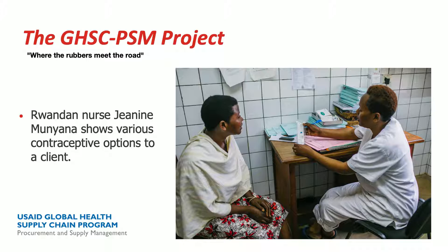This presentation will look specifically at our work in reproductive health, and specifically contraceptives. I like to say that we are where the rubbers meet the road. Joking aside, I love this picture — it's from a video we shot in Rwanda. It's a picture of a nurse named Janine Munyana working with a client, showing her different options for contraception. Without strong supply chains and the support of donors like USAID, nurses like Janine and her client wouldn't have reliable access to these kinds of things — especially the kinds of things that we take for granted.